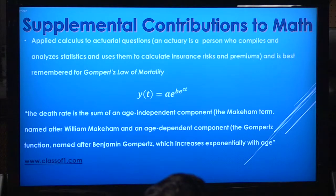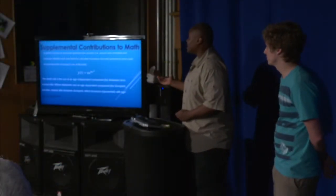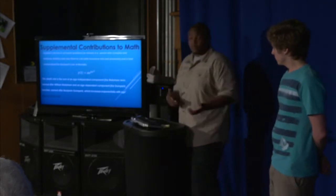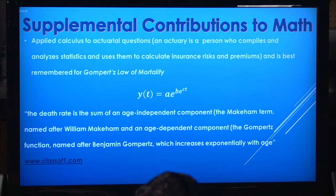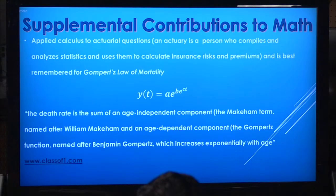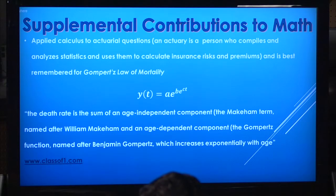As for Gompertz, he had a few other contributions to math — particularly applying calculus to actuarial questions. An actuary, if you don't know, is somebody who basically estimates insurance premiums. He made up a law of mortality. That function helped find rates to charge people. The definition is: the death rate is the sum of an age-independent component, the Makeham term named after William Makeham, and an age-dependent component, the Gompertz function named after Benjamin Gompertz, which increases exponentially with age. It starts off higher, goes low, and then goes high again.